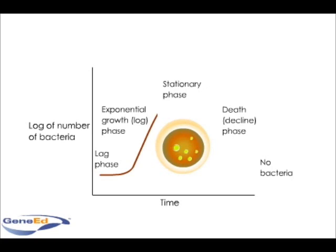That is, one bacterium divides into two, which replicate into four, which then produce eight, and each individual bacterium in the process replicates at a constant rate. As the bacterial population continues to grow,